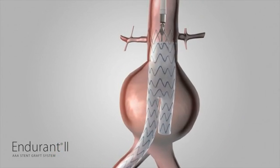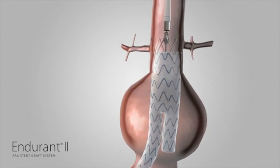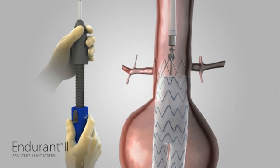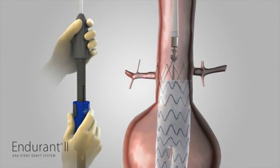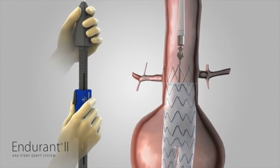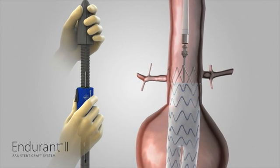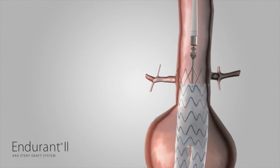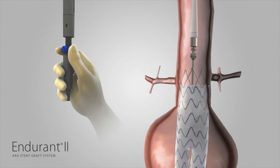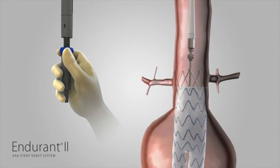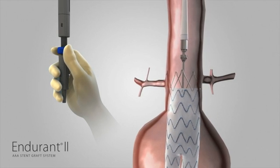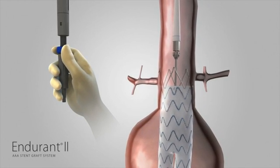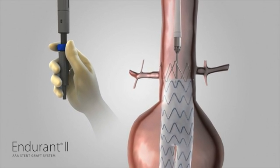The tapered tip of the Endurant 2 aortic delivery system needs to be recaptured before removing the delivery system. Gently torque and push the entire delivery system in a cranial direction using a counterclockwise motion, approximately three centimeters, so that the tapered tip and spindle are completely clear of the suprarenal stent. Then rotate the back end wheel counterclockwise in the opposite direction of the arrows until the spindle has been completely recaptured in the tapered tip and the back end wheel has been returned to the bottom of the back end screw gear.